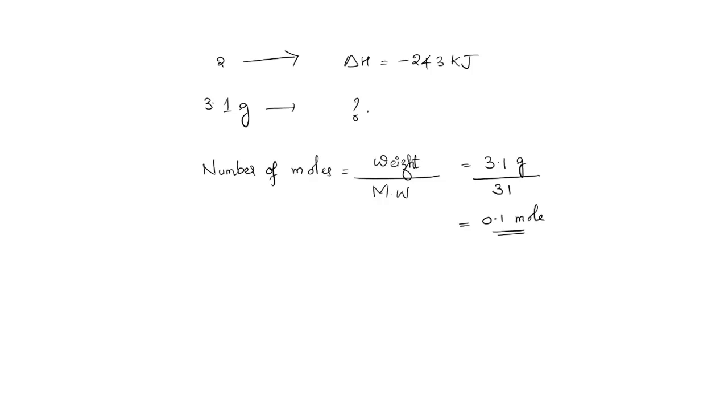So if 2 moles of phosphorus is consumed, ΔH = -243 kJ. We have to find out when 0.1 mole of phosphorus is consumed what will be ΔH. This is a simple mathematical calculation. No need to think much about any thermodynamic theories.